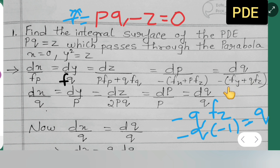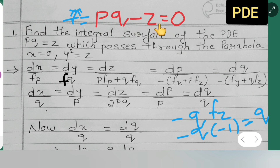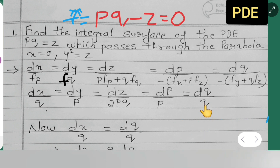For the dq term: −Fy − q·Fz. There is no y term, so Fy = 0. And q·Fz = q·(−1) = −q, so −q·Fz = +q. Therefore the dq term equals q. Now we take the pair dx/q = dq/q.